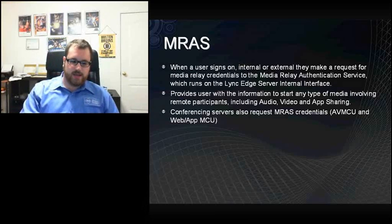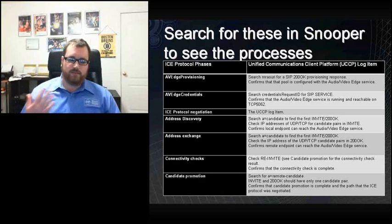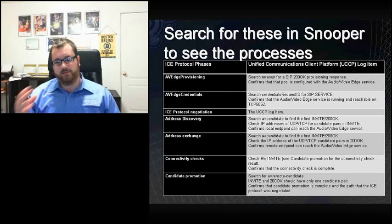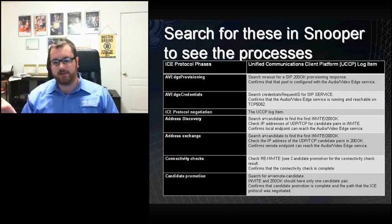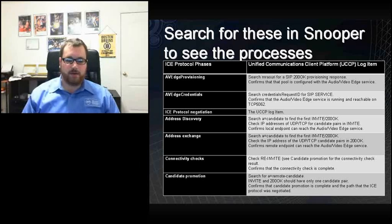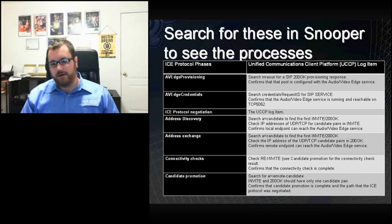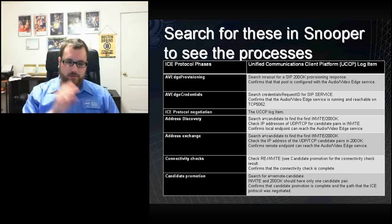The next deck is another reference deck — it shows the things to look for when you're actually looking in traces using Snooper or the UCC API logs on the client. This is how to identify the different phases in these logs. You can search for specific keywords in the log to see those different phases.